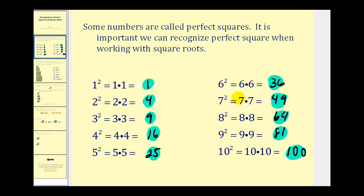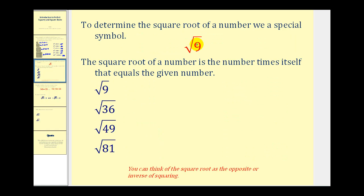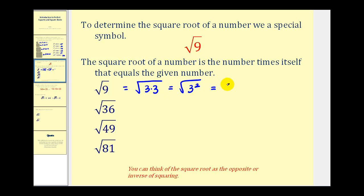Now that you have a feel for perfect squares, let's talk about square roots. To determine the square root of a number we have a special symbol, as we see here — this is the square root of nine. The square root of a number is the number times itself that equals the given number. To determine the square root of nine, we need to determine what number times itself gives us nine. Since nine is a perfect square, we can write nine as three times three, or three squared. Therefore the square root of nine is equal to three, because three times three equals nine.